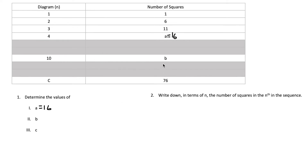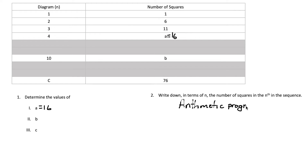For the rest of the questions, since we skip a few terms, instead of writing out all the terms to find the 10th, it is easier to find the rule of the sequence first. We can then complete question two and go back to find b and c. Because we have a common difference, we can use the arithmetic progression formula to find the rule of the sequence.